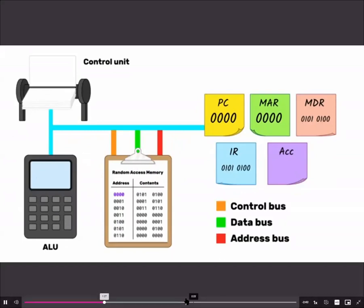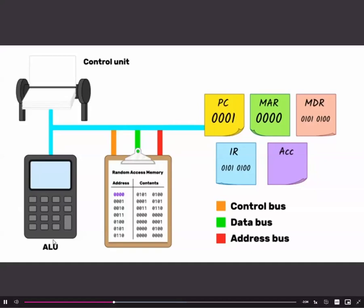As the first instruction has been fetched, the system is at the end of the fetch stage of the cycle. The program counter can be incremented by 1, so the system is ready to read the next instruction.